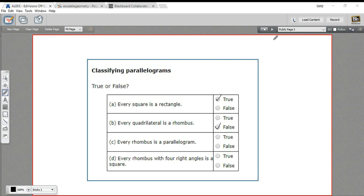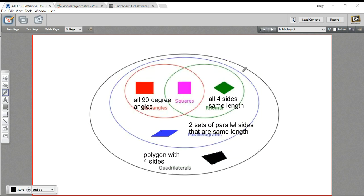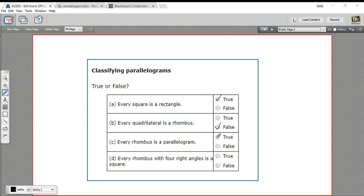Then this one says every rhombus is a parallelogram. Let's go back to our diagram. So here's the rhombus. It's inside the parallelogram circle. So yeah, every rhombus has to be a parallelogram. So that is true.